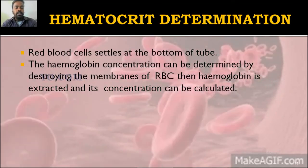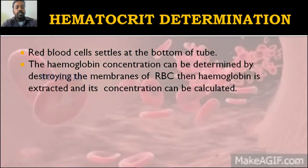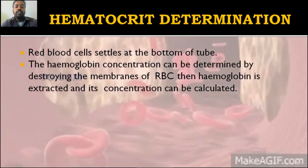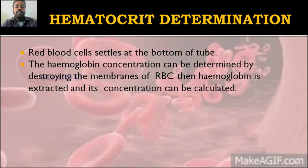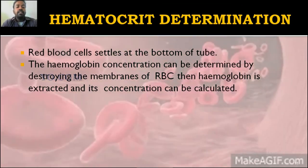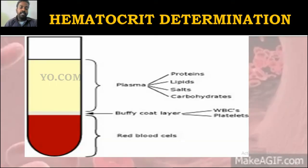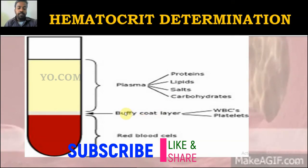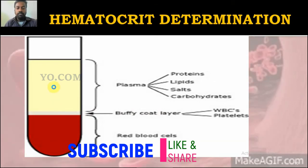The red blood cells settle at the bottom of the tube. The hemoglobin concentration can also be determined by destroying the membranes of RBCs to extract the hemoglobin from the buffy coat layer, and then its concentration can be calculated.